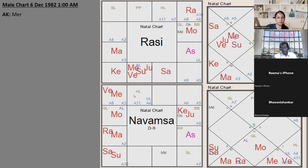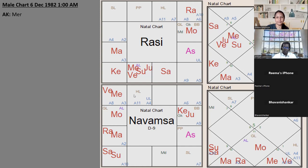This is the importance of the Navamsa chart. If you do not couple the Navamsa chart with the Rasi chart, you can be totally misled. When I first saw this chart, I thought it was a Raja Yoga chart - in the 1980s when he was born, I told his mother this is a fantastic horoscope. I was a beginner then, but later I understood from this chart how important Navamsa is. Without understanding Navamsa, reading only the Rasi chart can be extremely dangerous.